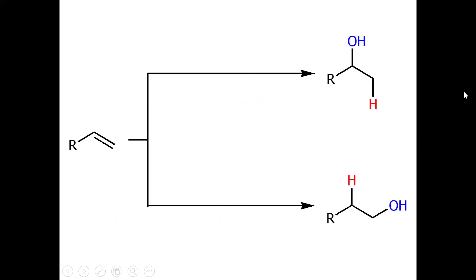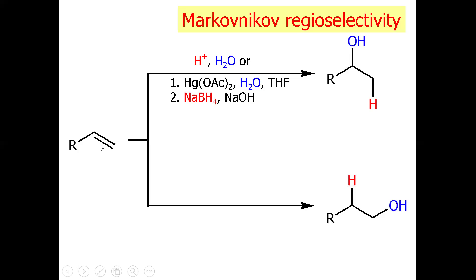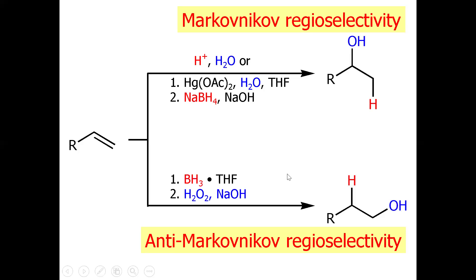Let's apply these methods to specific examples. In a substituted alkene with CH2 and CH groups, if CH2 converts to CH3 and OH is added at the CH carbon, this follows Markovnikov's regioselectivity — achievable via acid-catalyzed hydration or oxymercuration-demercuration. Conversely, if OH is added at the CH2 carbon, this follows anti-Markovnikov regioselectivity, requiring hydroboration-oxidation. There is no rearrangement involved in either of these cases.